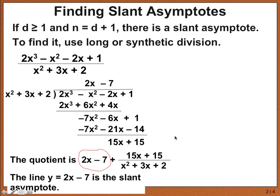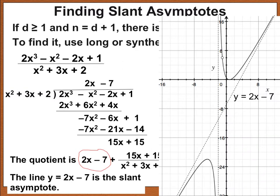So the line y equals 2x minus 7 is the slant asymptote. Looking at the graph, the dotted line 2x minus 7 is drawn. The grid marks go by 2s, which is why the y-intercept appears at negative 7. With a slope of 2, the curve approaches the slant asymptote and never touches it. There's an empty ball at x equals 1 because that point is not in the domain of this function.